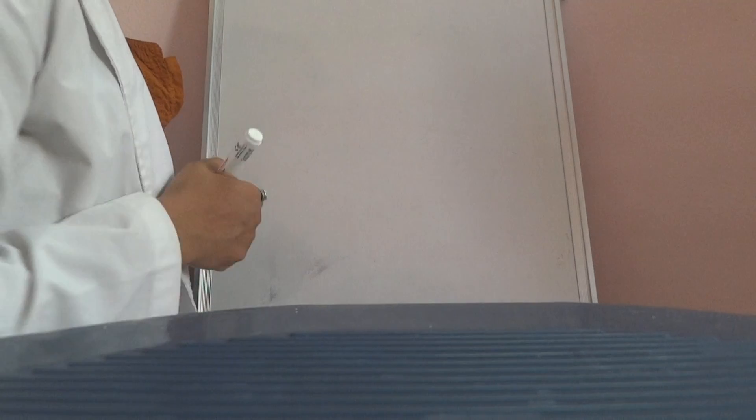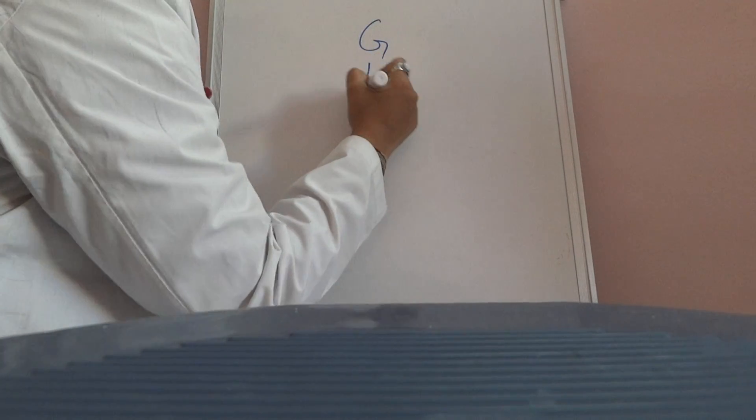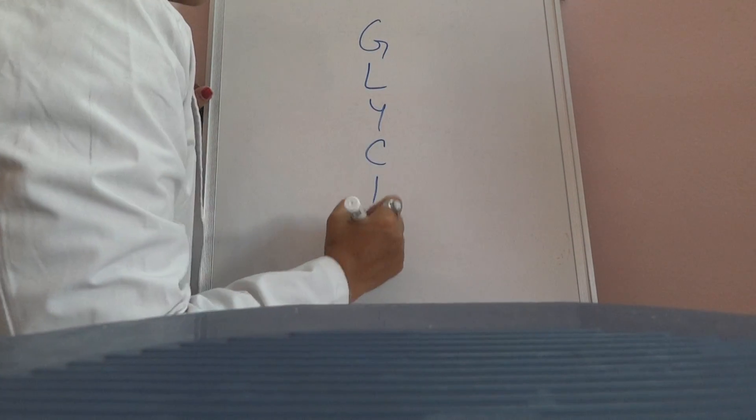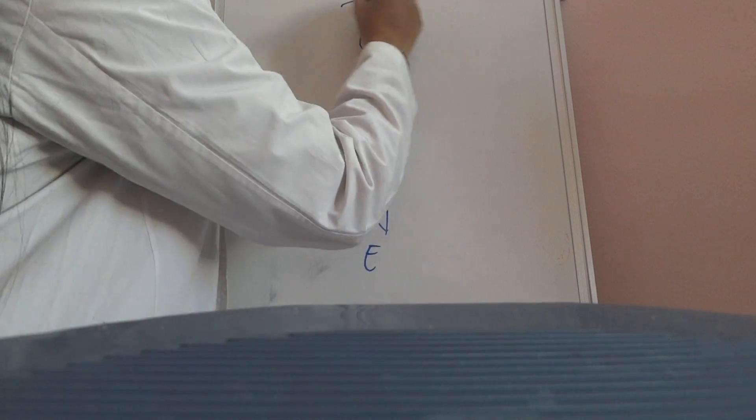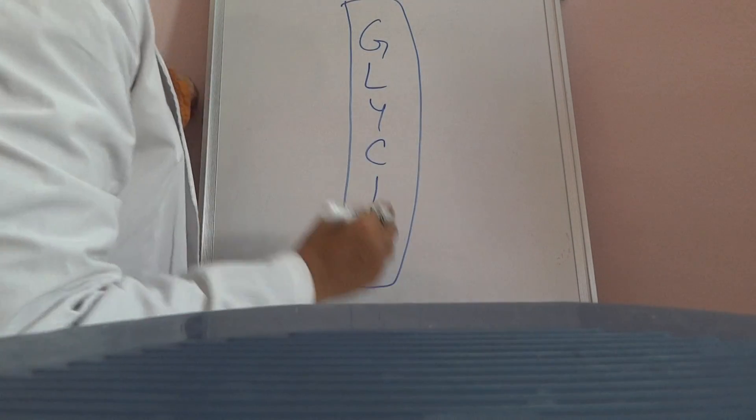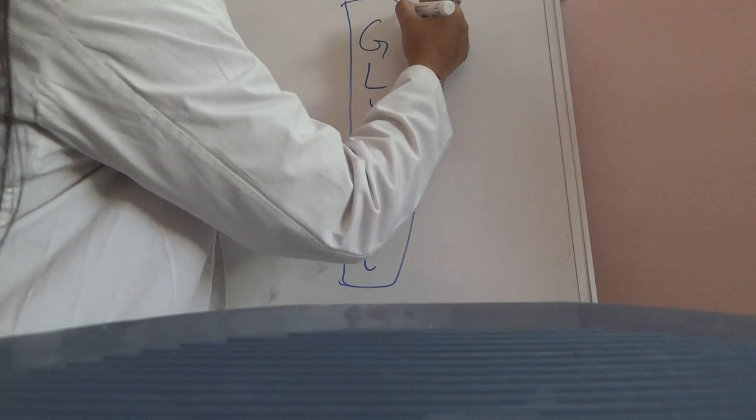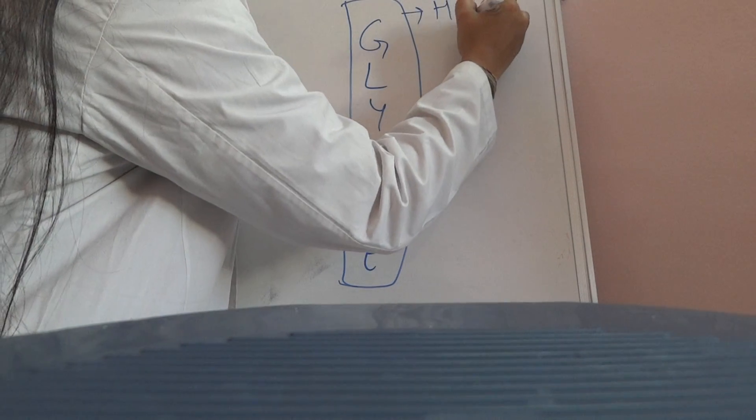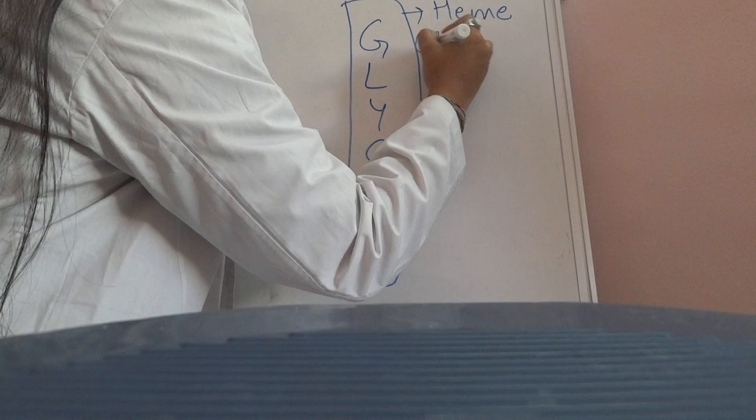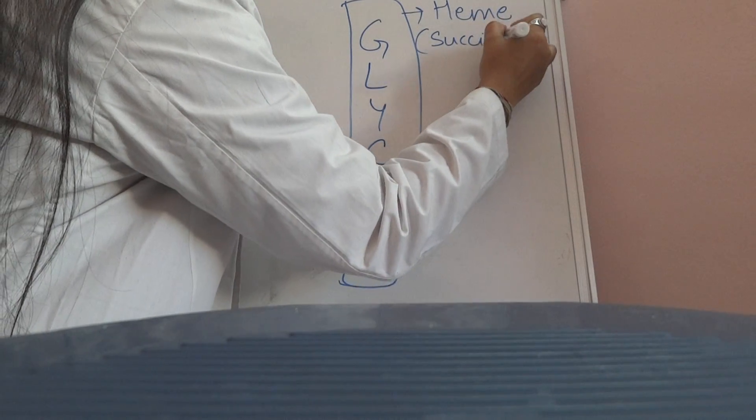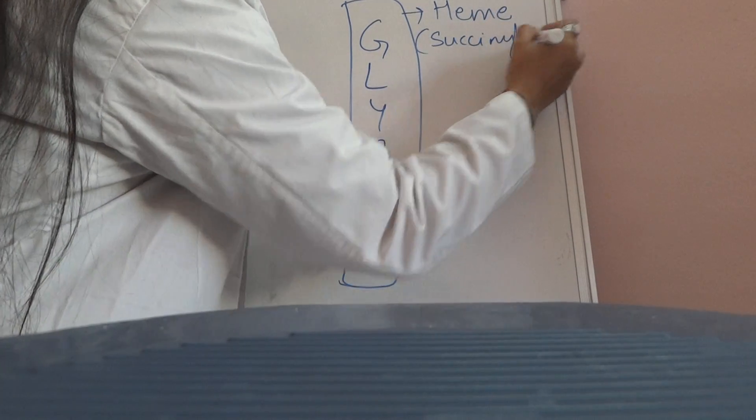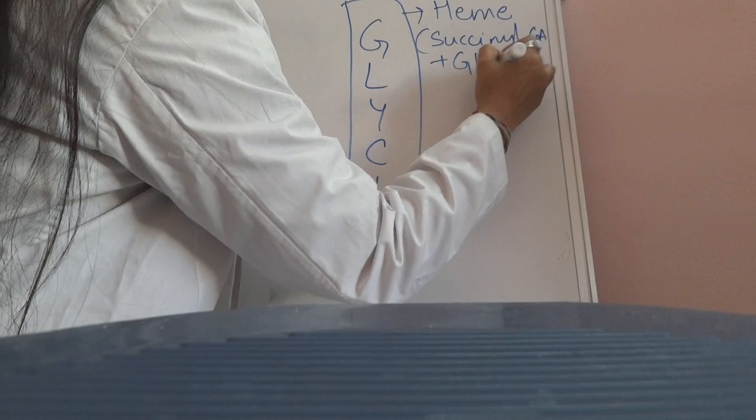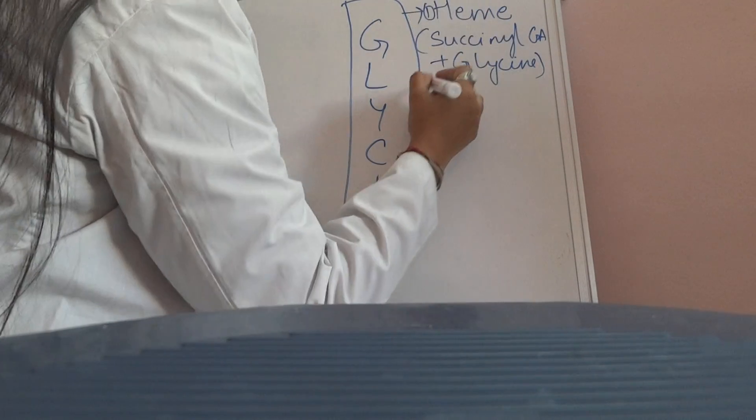Now coming to the products which are formed from Glycine. There are a number of products which are formed from Glycine. The most important being Heme. Heme is formed from succinyl-CoA and Glycine. So first is Heme.